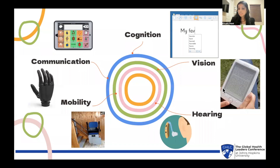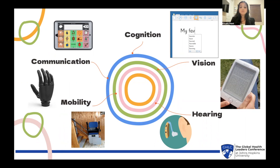Moving on to vision — this can be as simple as glasses or screen readers with the speech-to-text function for those who are visually impaired. For mobility, crutches, wheelchairs, and prosthetic limbs are all things that aid those whose physical impairments hinder their ability to move in their everyday lives. These kinds of technologies reduce the chances of accidents and allow people with physical impairments to maintain good health.